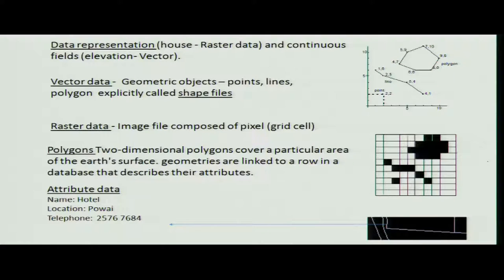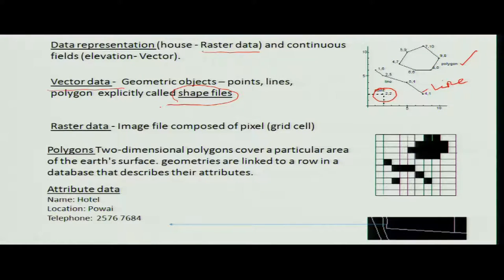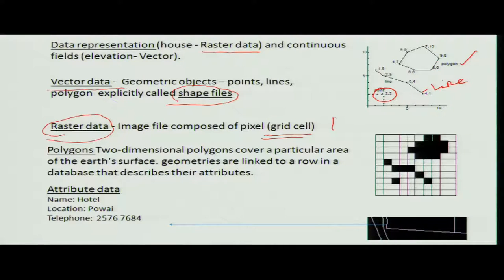Data in GIS is represented in two ways: raster and vector. Raster is a point you can see on a diagram; if points are connected in one dimension, it becomes a line; and if they form a closed shape, it is called a polygon. These raster images are stored in GIS as shape files. The vector type consists of point, line, and polygon — a point is zero-dimensional, a line is one-dimensional, and a polygon is multi-dimensional. Raster images are grid cells, while vector data uses continuous points.